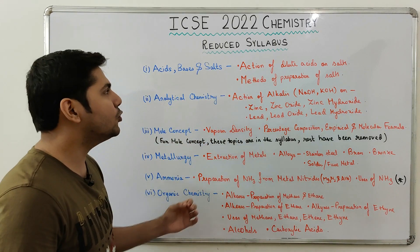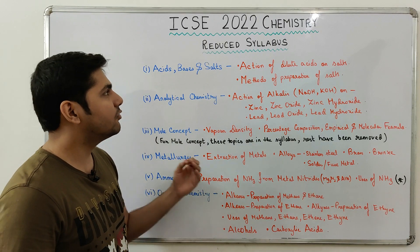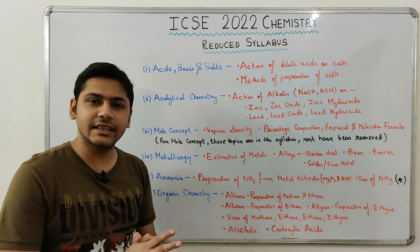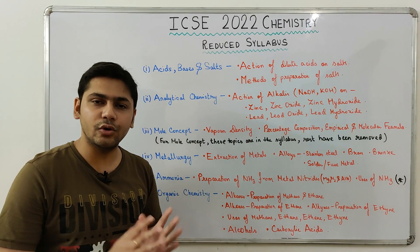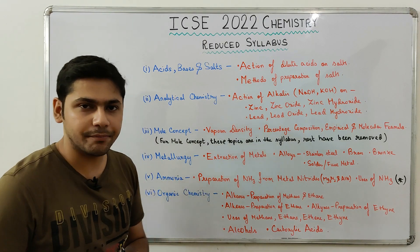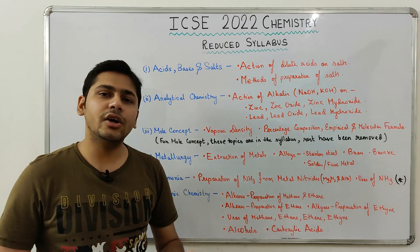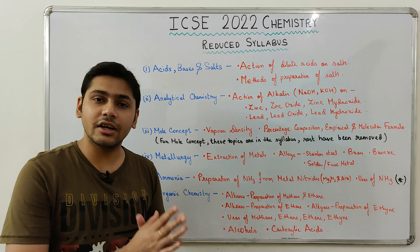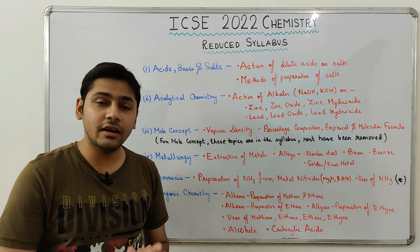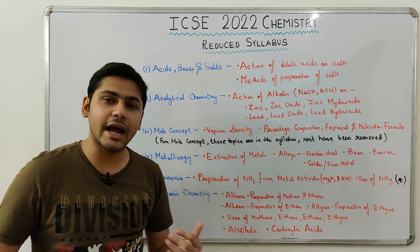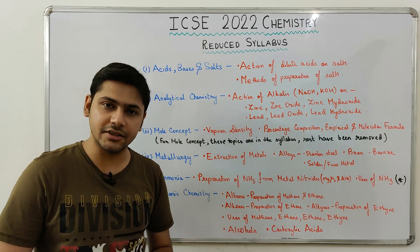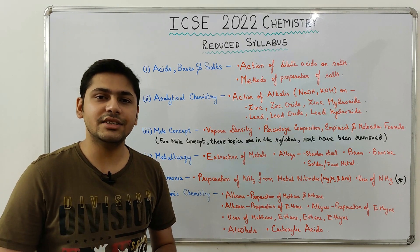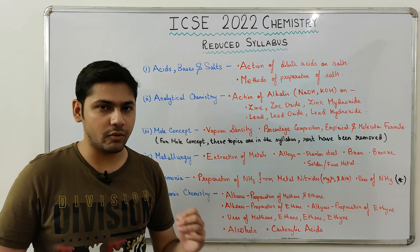The reduced syllabus for ICSE 2022 Chemistry. In total, reduction has been done from 6 chapters of Chemistry. Let's check them out one by one.